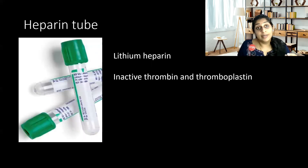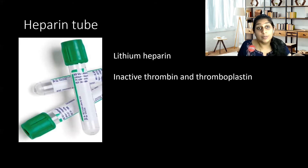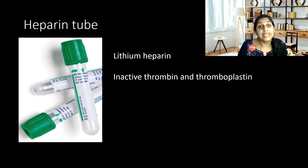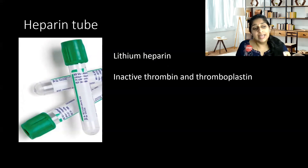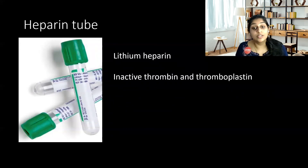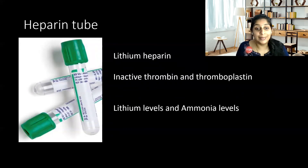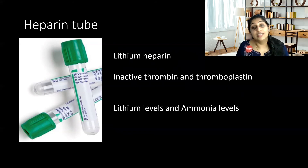Coming to the last tube, which is not very widely used but you need to have at least one or two stocks in your laboratory — that is the heparin tube, or the green color coded tube. It has lithium heparin, and it inactivates the thrombin and the thromboplastin in the blood. This tube is mainly used for measuring the lithium levels and the ammonia levels.